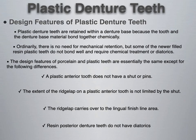The design features of porcelain and plastic teeth are essentially the same except for the following differences: a plastic anterior tooth does not have a shutter or pin; the ridge lap on a plastic anterior tooth is not limited by the shut and carries over to the lingual finish line area; and resin posterior denture teeth do not have diatorics. However, holes and mechanical retention can be placed on plastic teeth if you want both chemical and mechanical bonding.